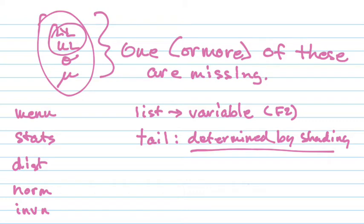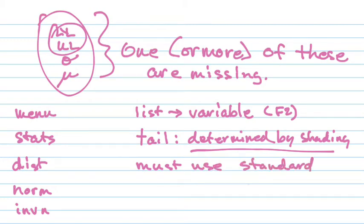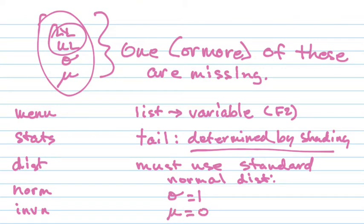They may give you a mean and a standard deviation — or they may not. But any time you're doing the inverse, it doesn't matter if they give you the mean and the standard deviation — you must not use it. You must use the standard normal distribution, which means a standard deviation of 1 and a mean of 0. So you're going to put in your tail, 1 for sigma, and 0 for mu.